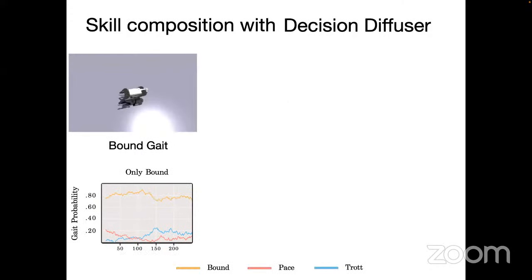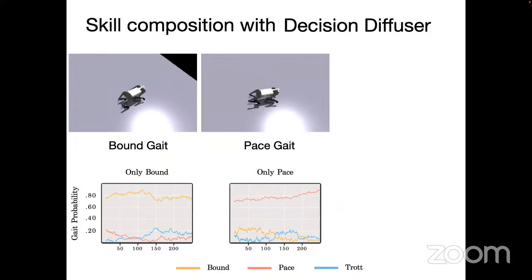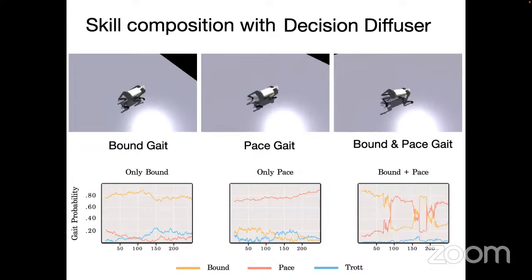You can also compose different skills together — conditioning one diffusion model on a particular skill such as 'bound' and another on 'pace,' then adding the noise predictions to compose the models. This generates behavior that mixes bounding and pacing. The bottom row represents the predicted behavior from a classifier, which iterates between bound and pace. By composing generative models, we have great flexibility in making new behaviors.